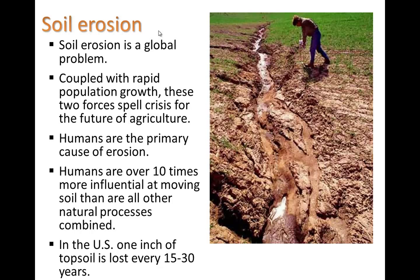In the US, one inch of topsoil is lost every 15 to 30 years, and this topsoil can take an extremely long time to build up. From 1957 to 1990, China lost as much arable farmable land as exists in Denmark, France, Germany, and the Netherlands combined. In Africa, in the next 40 years, soil degradation could reduce crop yields by half of what they are right now. And Africa is one of the fastest growing regions in population size, so we have some real challenges ahead.